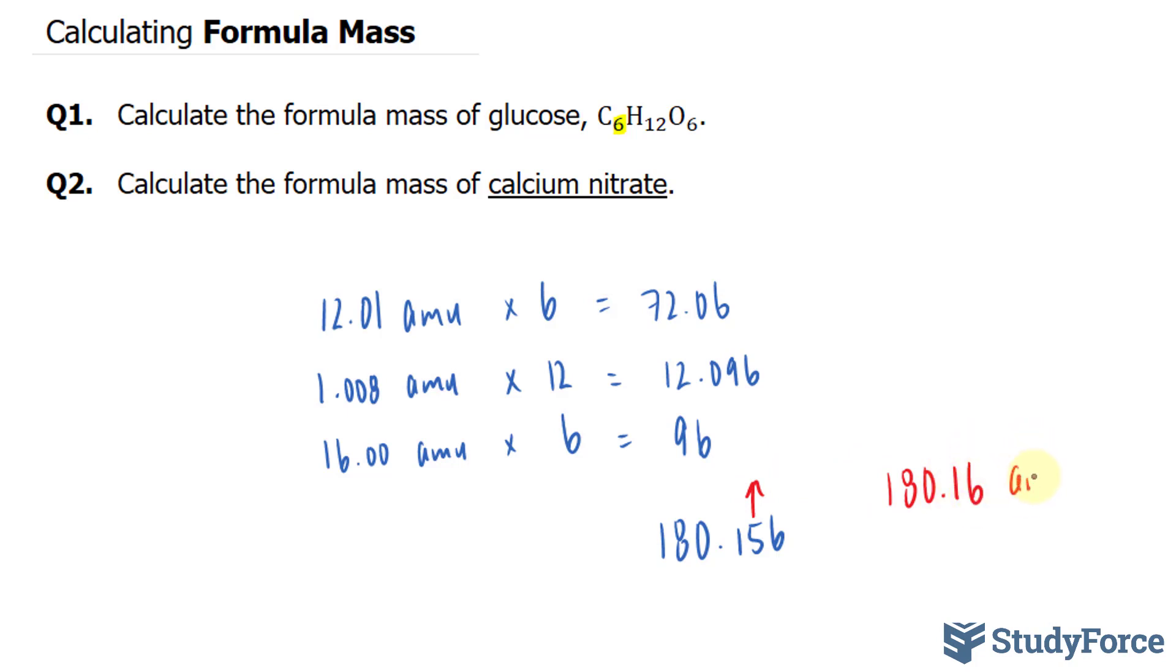And the reason why I'm doing that is because we have two zeros following the decimal place. And when you add numbers together, you have to take into account the lowest amount of decimal places. And for these three numbers, it happens to be two. So our final answer should also be rounded to two decimal places. Therefore, the formula mass of one glucose molecule is 180.16 AMU.